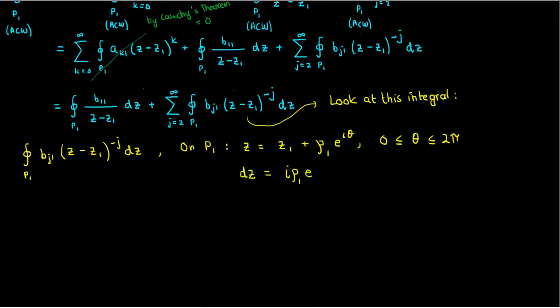If I take the differential of this, then I can see that dz is just ρ1 times i times e to the iθ dθ, where θ varies from 0 to 2π. Now when I'm doing a contour integral around the whole circle, that's the same as keeping the radial position ρ1 constant and varying θ from 0 to 2π.